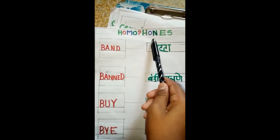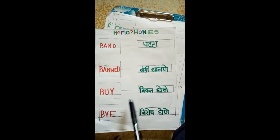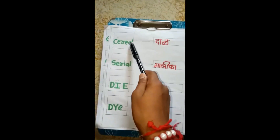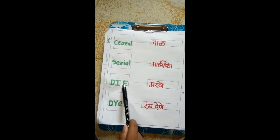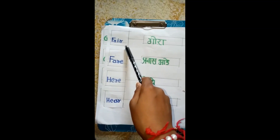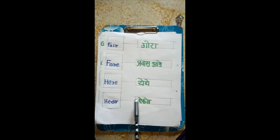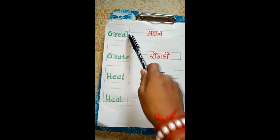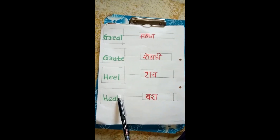There are homophones: band — Patta, band — Bandi Galne; by — Vikad Gene, by — Nirob Gene. Second chart: cereal — Dal, cereal — Malika; dye — Marne, dye — Rangadene. Next chart: fair — Gora, fair — Pravas Bade; here — Athe, here — Aekne. Next chart: great — Mahan, great — Shegdi; heel — Taach, heel — Bara.